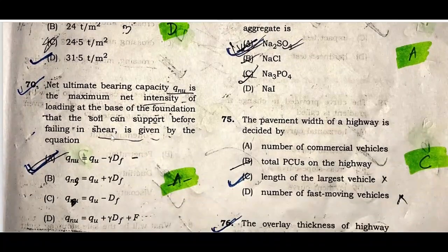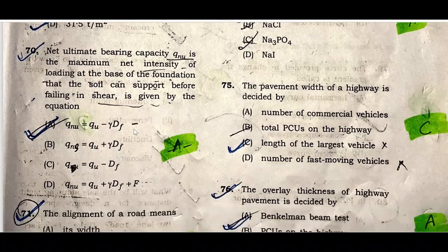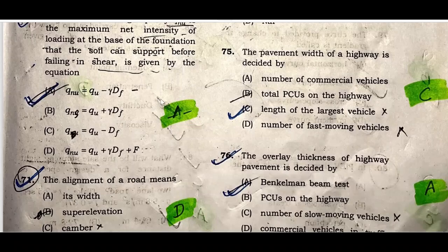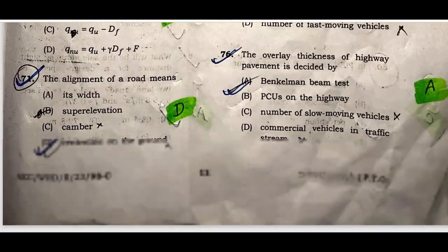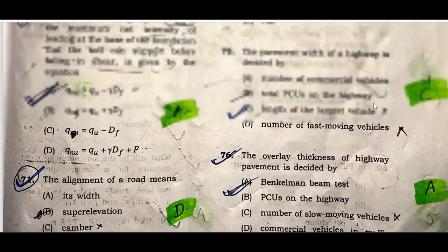Question seventy: Net ultimate bearing capacity — Q_nu is the maximum net intensity of loading at the base of the footing that the soil can support before failing in shear. It is given by the equation Q_nu = Q_u minus γ·D_f. Question seventy-three: The alignment of a road means the center line on the ground.